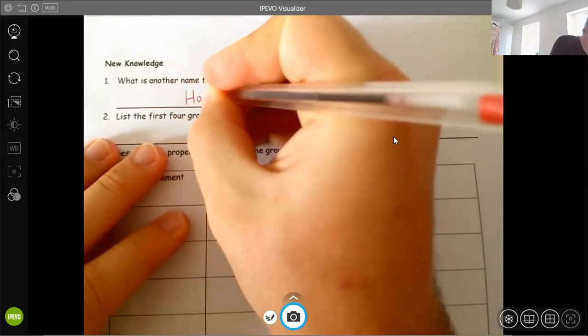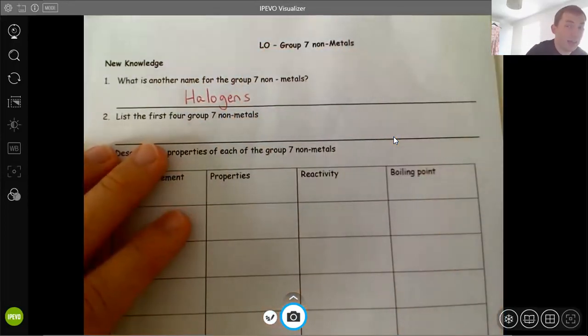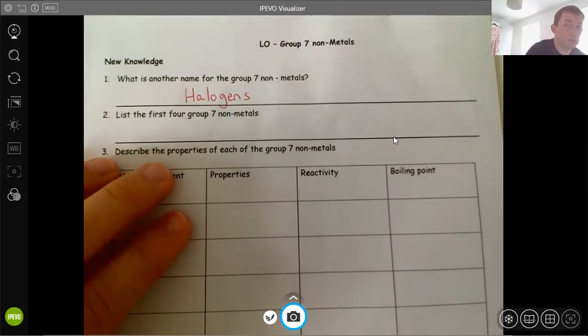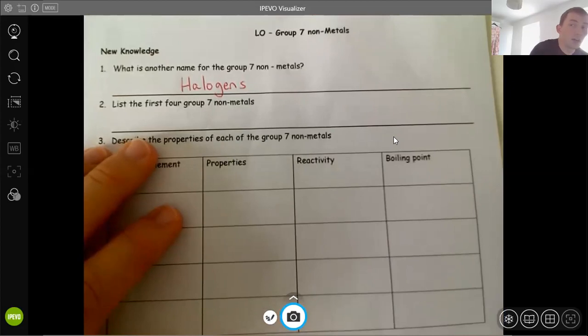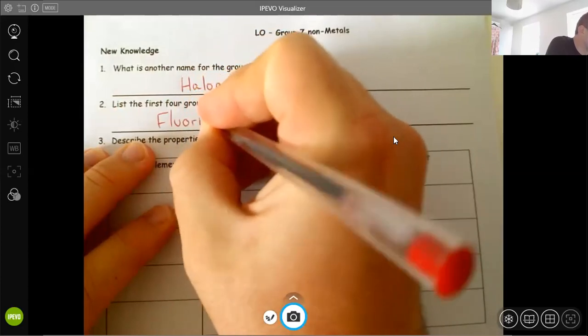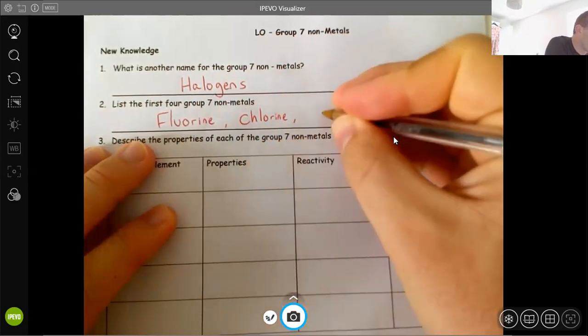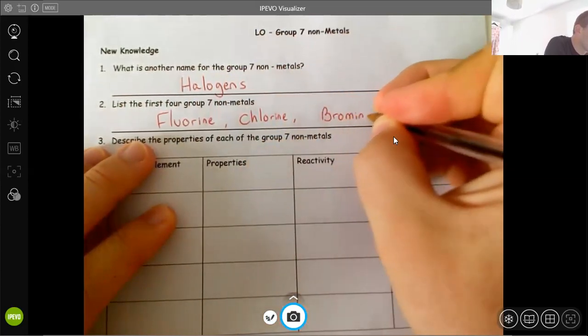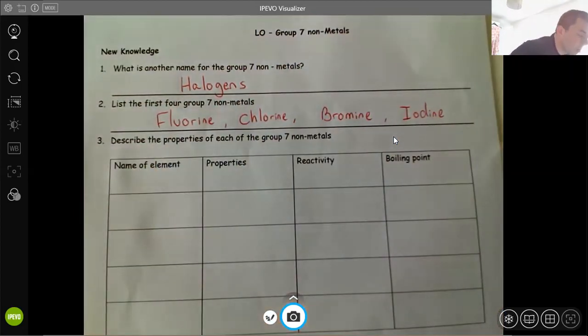Halogens, H-A-L-O-G-E-N. Halogens. Now that actually means salt makers, so they make salts. But that's what you need to know: halogens. And the first four of Group 7 you need to know a lot about are fluorine, chlorine, bromine, and iodine. So those are the first four Group 7 nonmetals that we need to know about, and they're the ones we're going to concentrate on today.